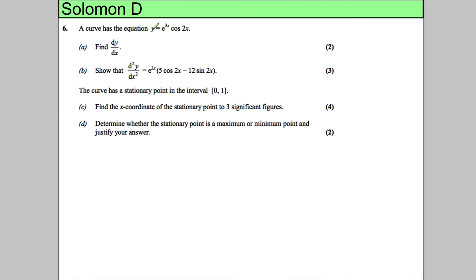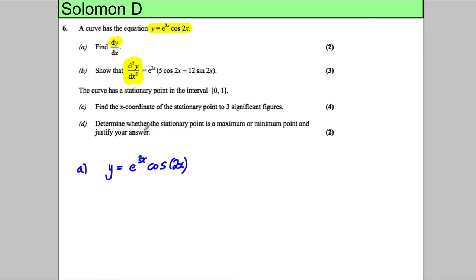We have an equation of a curve: y is equal to e to the power of 3x cos 2x. We're asked to find dy/dx, and then differentiate again to show a given result is true. For part A, y equals e to the power of 3x cos 2x. You should immediately spot you've got a product rule, with u equal to e to the 3x and v equal to cos 2x.